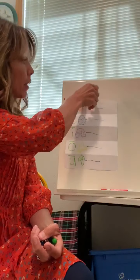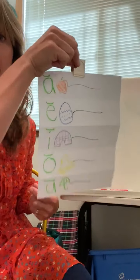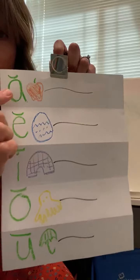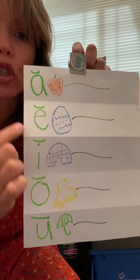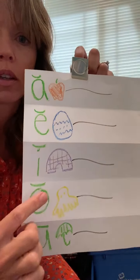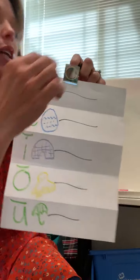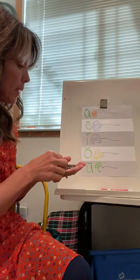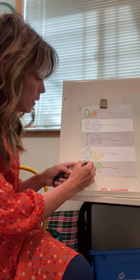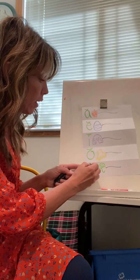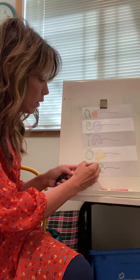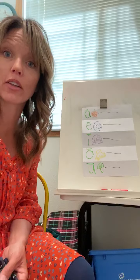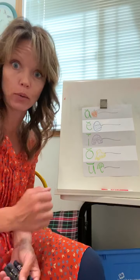If you take a look at my chart, I put these little curved lines above my letters. That shows — that means short. So if you ever see that above a vowel, that means it's the short vowel sound.